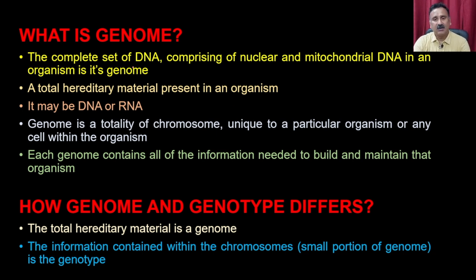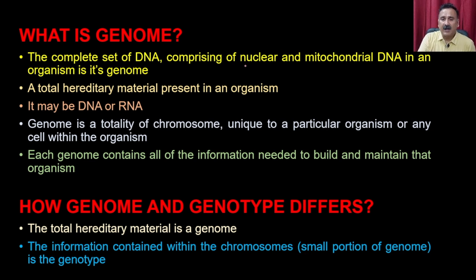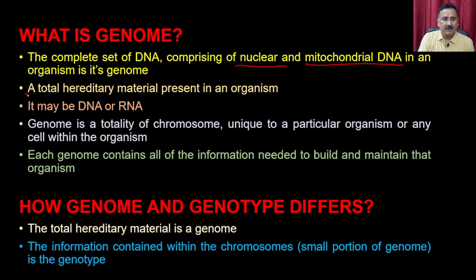The genetic material is a complete set of DNA comprising nuclear and mitochondrial DNA in an organism, collectively called the genetic material. This definition is not fully applicable to prokaryotes since they do not contain mitochondria. In general, the most acceptable definition is that the genome is the complete set of DNA present inside a particular type of cell, and it is the hereditary material whose main purpose is to carry information from one generation to the next.